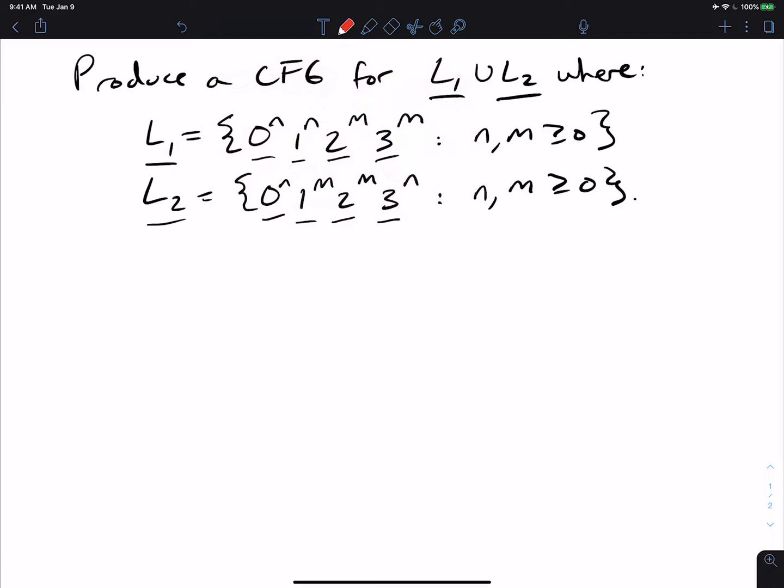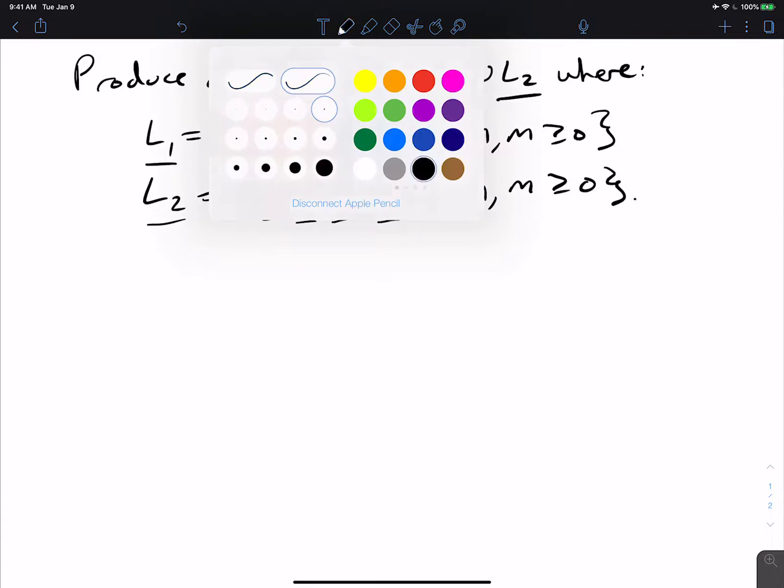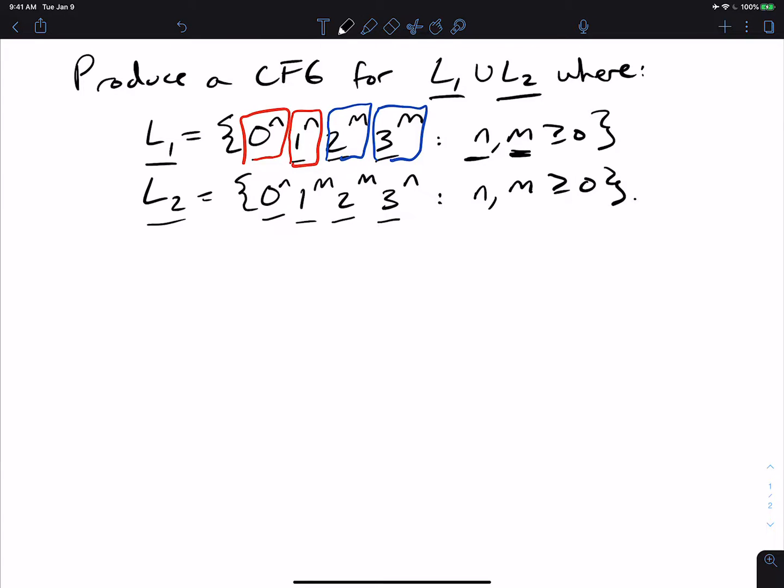So how do you make a CFG for the union? Note that for L1, we have adjacent runs of 0s and 1s which have the same number, and right next to those we have 2s and 3s having the same number, but there's no relation between n and m here. So n and m can be anything. But as long as we have the same number of 0s and 1s at the beginning, and then same number of 2s and 3s at the end, we can actually show that this is context free.